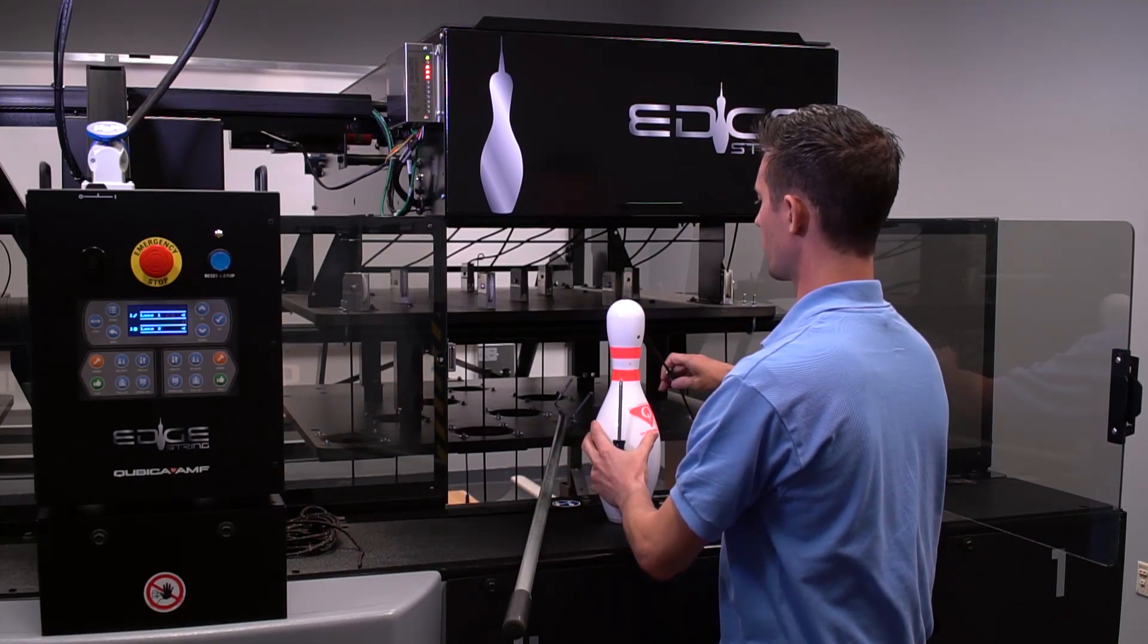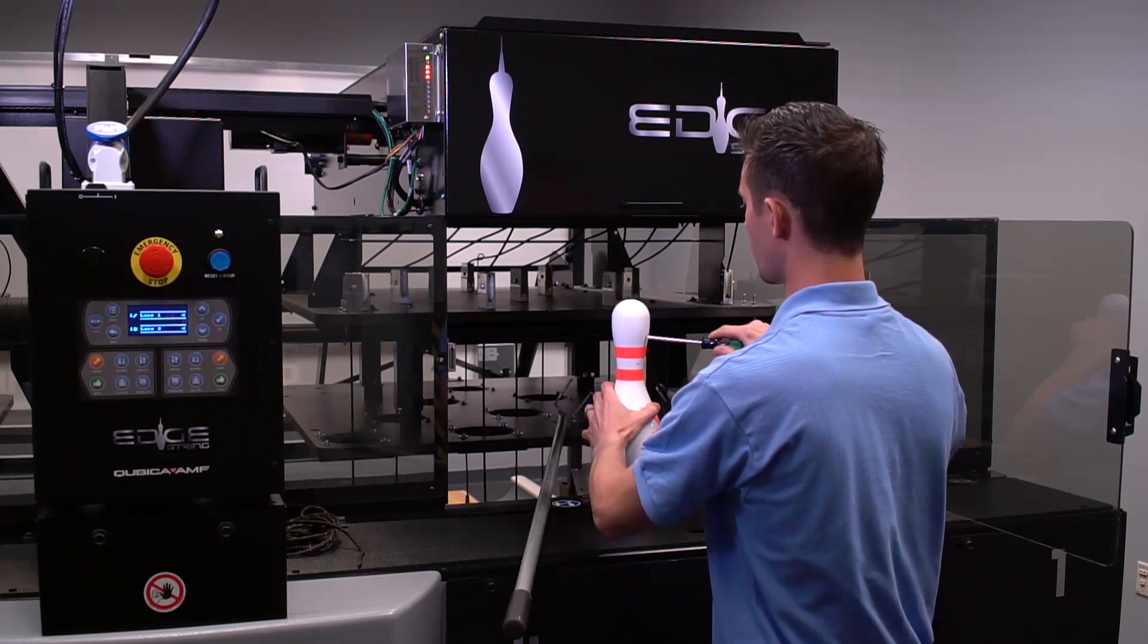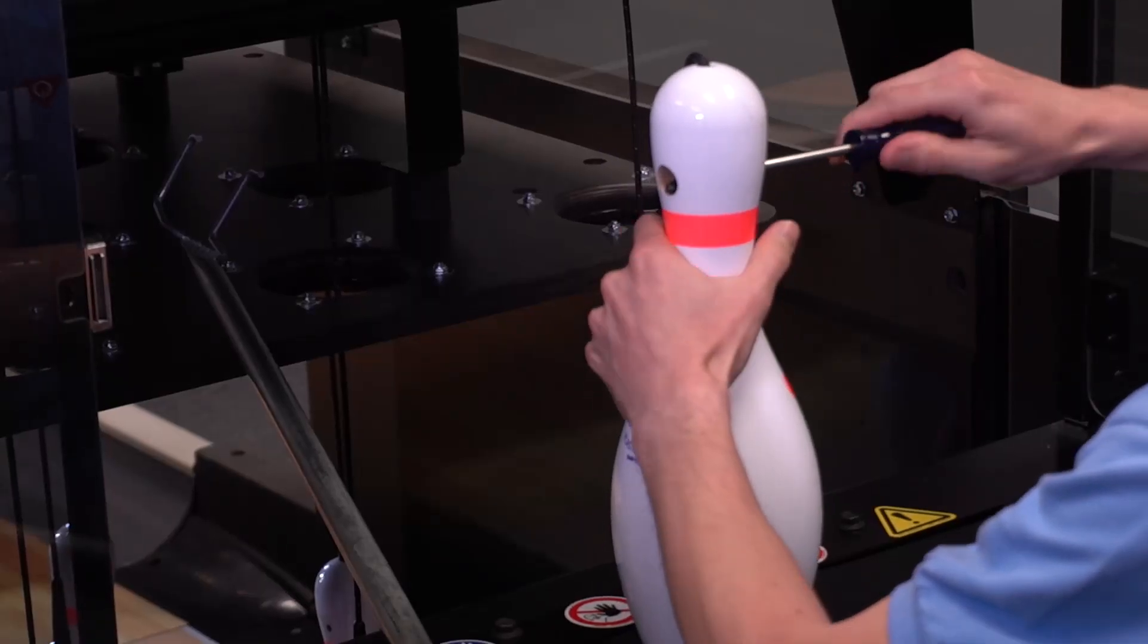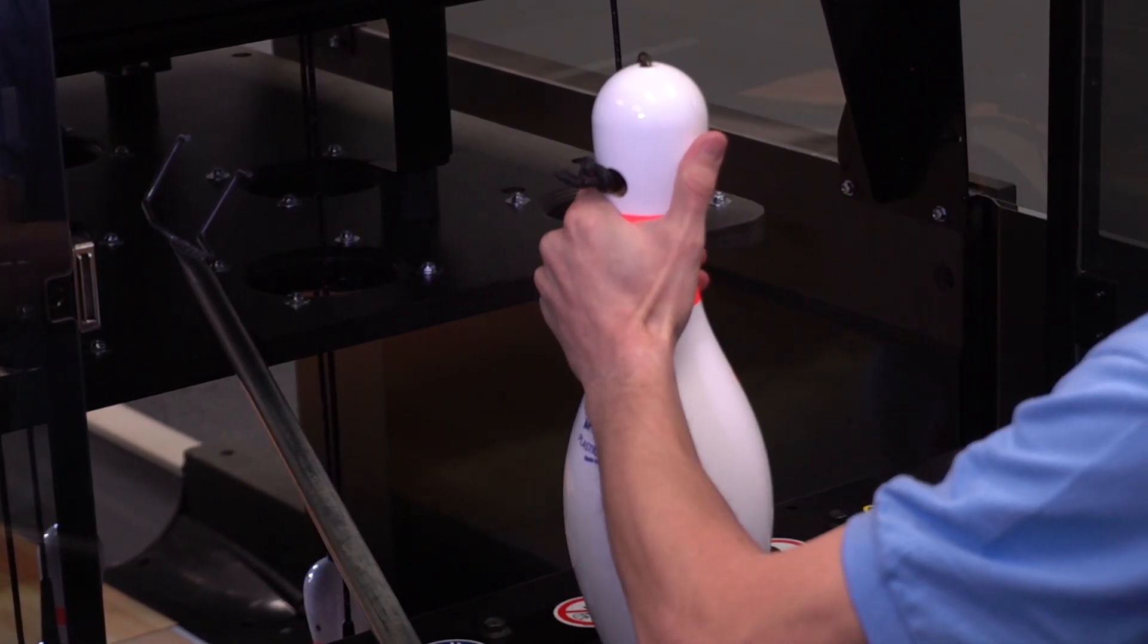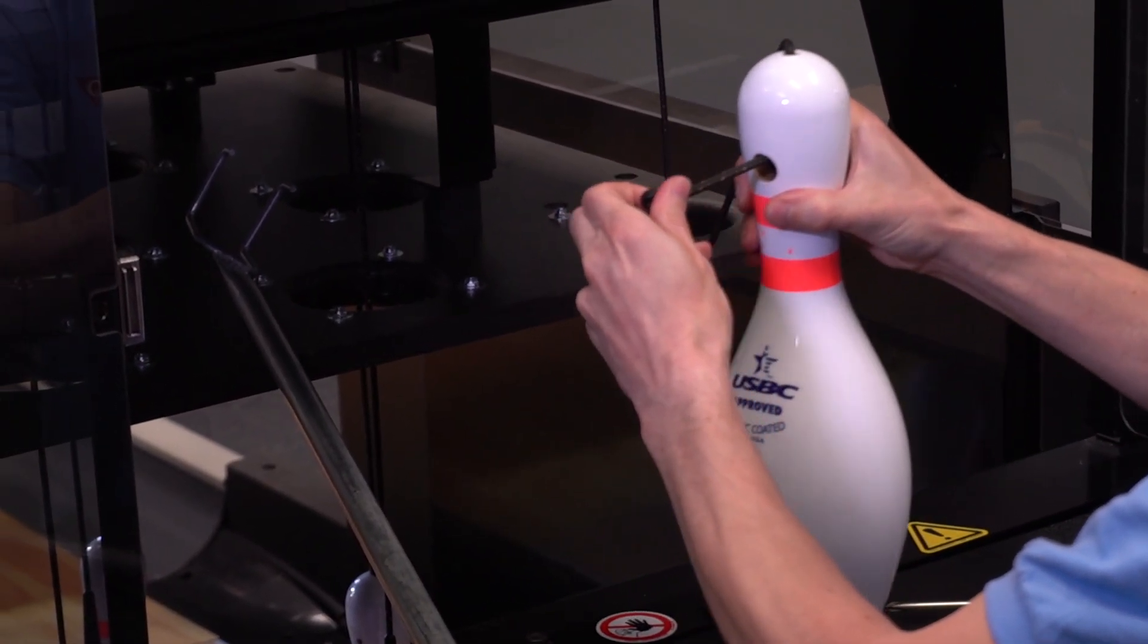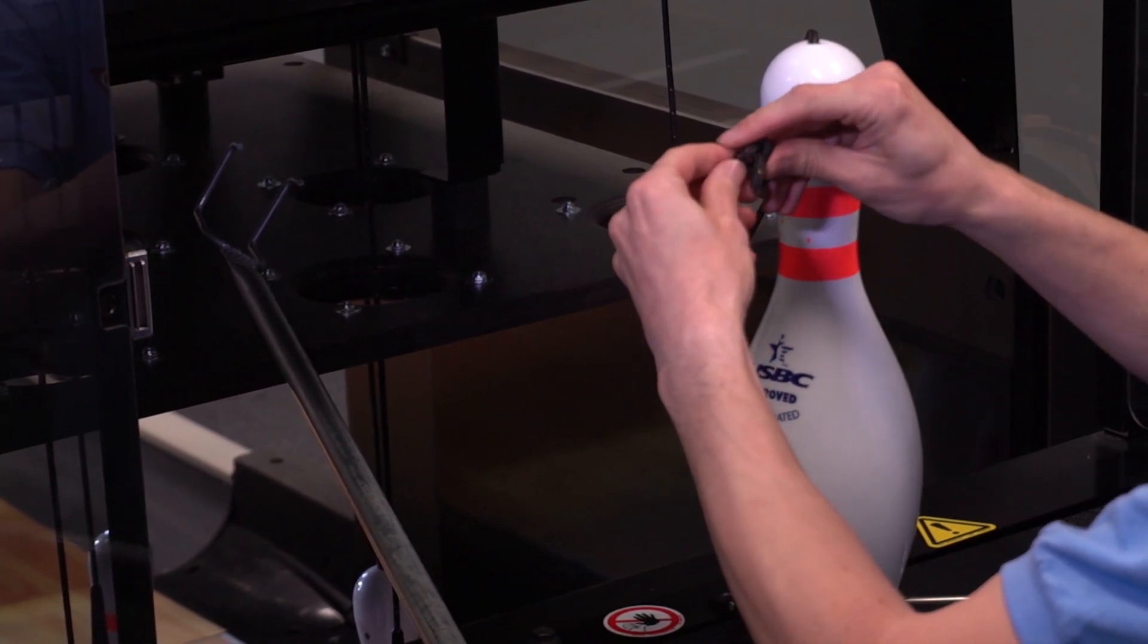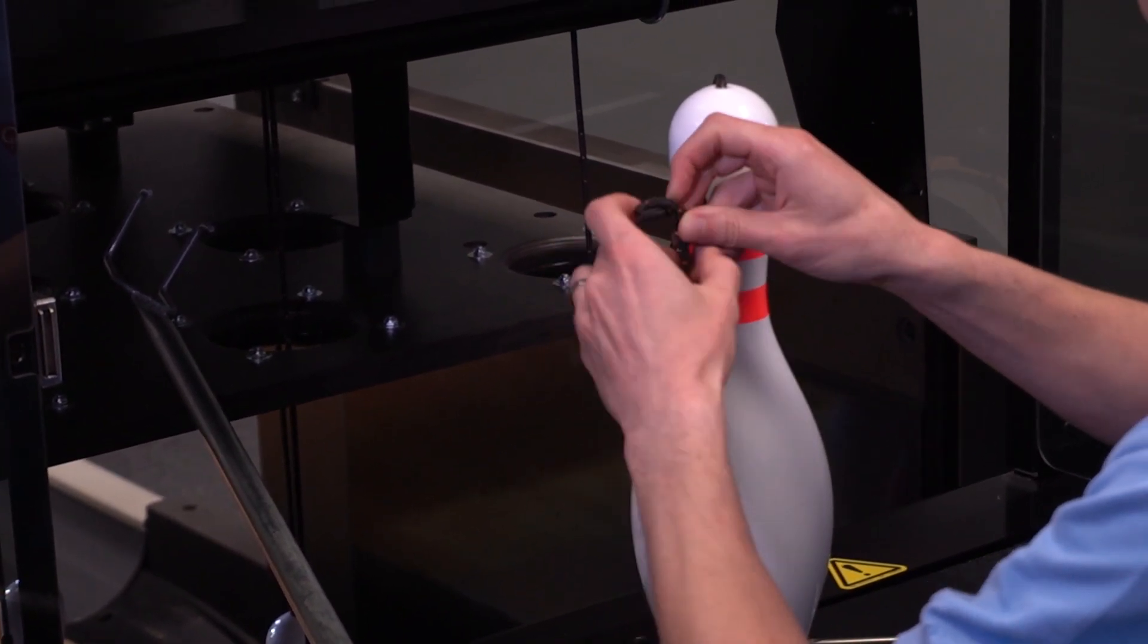Pull the pin bushing away from the pin. Insert a screwdriver into the small hole on the side of the pin. Push the string knot out through the large hole. Untie the string knot and remove the pin and pin bushing.